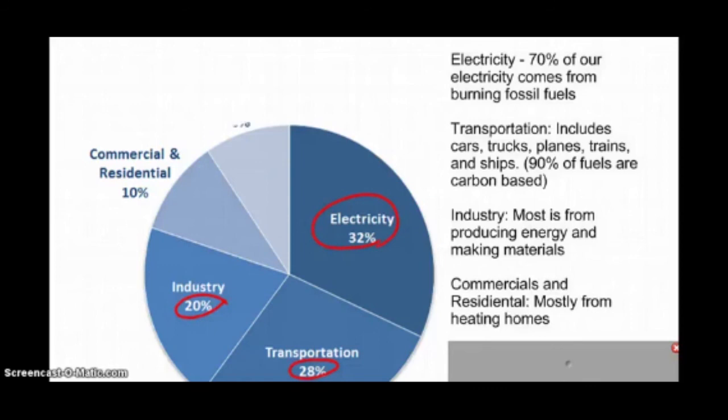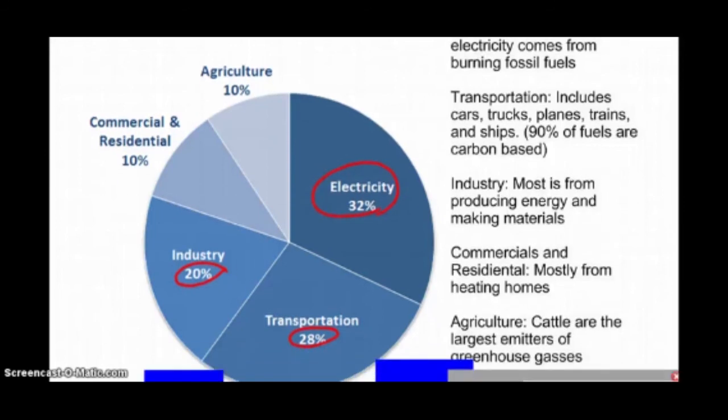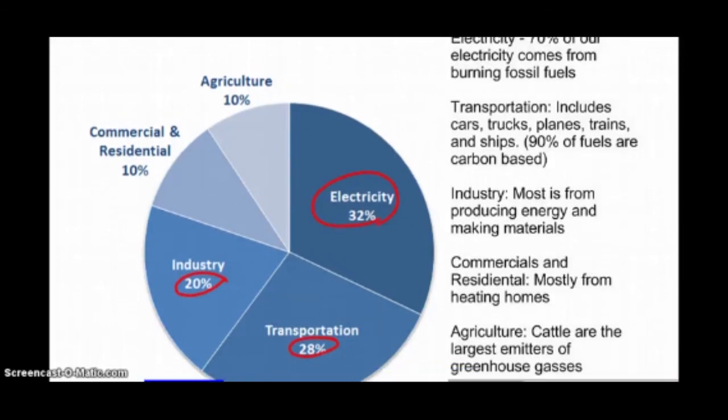The last one with 10% is agriculture. Agriculture, cattle are the major emitters of these greenhouse gases. Also, the different ways we use land and manage forests will emit a lot, too. These are the different ways we emit as a society.